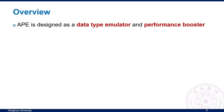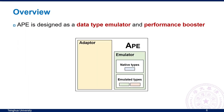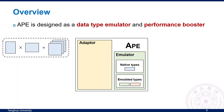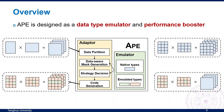Here is the overview of our system, which we call APE. APE is designed as a data type emulator and performance booster. The emulator provides various emulated data types using native and emulated types with similar precision. For specific computation, APE first partitions it into blocks and decides the data type for each input block. Then the adapter generates computation strategies and chooses the best one. Finally, APE generates efficient code, enabling low bit-width data types to emulate high bit-width computation in real-world applications.